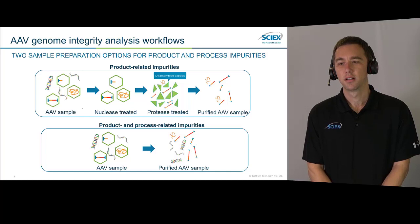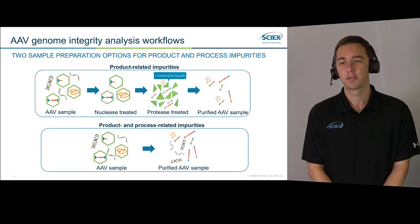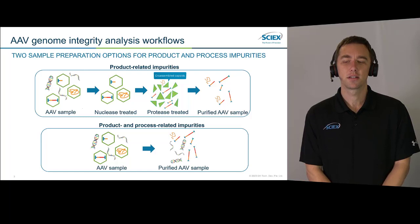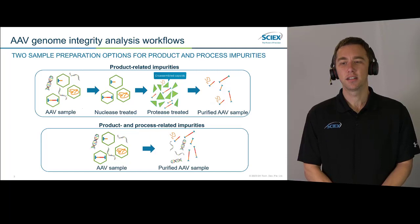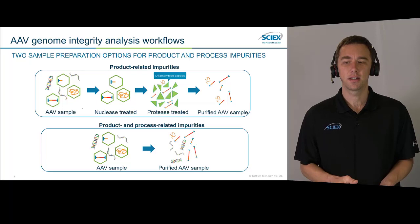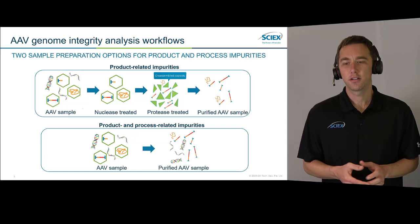Once we've chopped that up, we use a protease to disassemble the capsid so that we can release the encapsulated nucleic acids. Then we purify those nucleic acids away from the protein and run our analysis on that purified sample. If we want the quicker workflow that gives us an idea of both product and process-related impurities, we can just take that AAV sample — with fully encapsulated genome, truncated genome, potentially mis-genome, and all unencapsulated material — purify all of that away from the capsid, and then run that material.